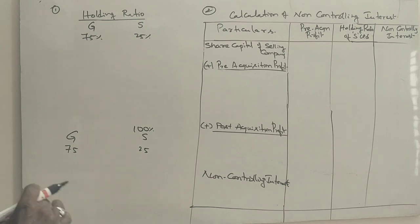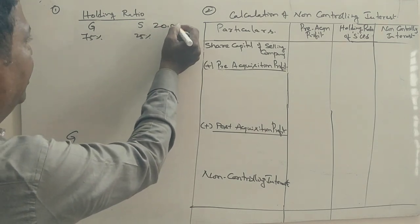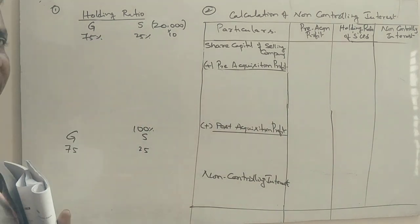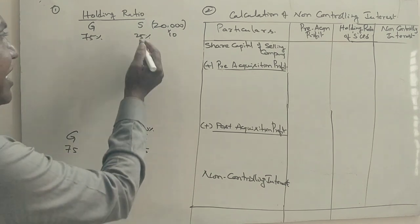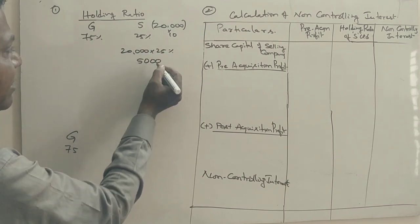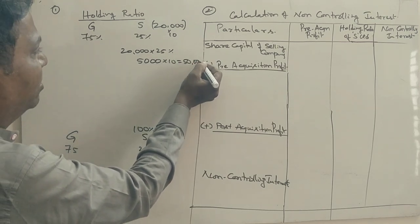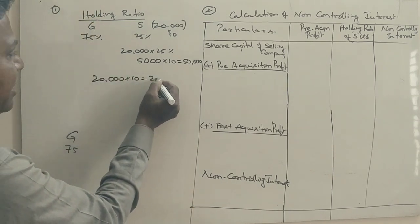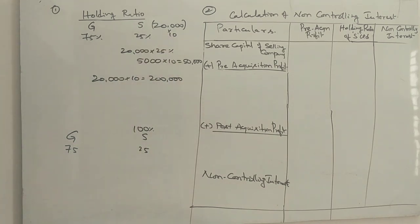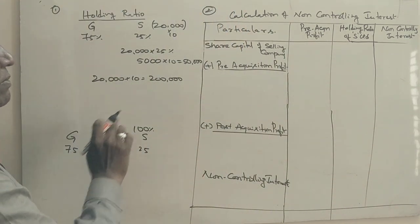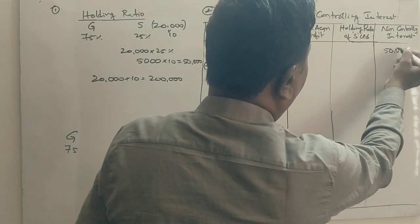Let's calculate. Sita has 20,000 equity shares, each of 10 rupees. Geeta company acquired 75% of Sita. The remaining 25% — that is 5,000 shares — are not acquired. Into 100 rupees each, that gives 50,000 rupees. Total share capital of Sita company is 20,000 into 100 = 2,00,000 rupees. Of this, Geeta purchased 75%, which is 1,50,000 rupees. The non-controlling interest share capital portion is 50,000 rupees.